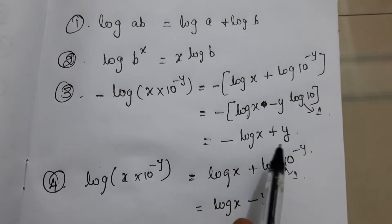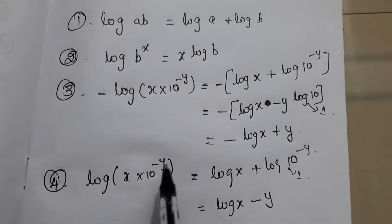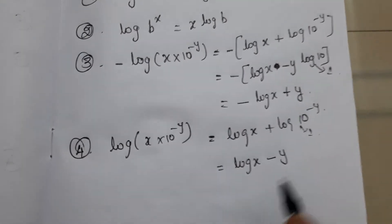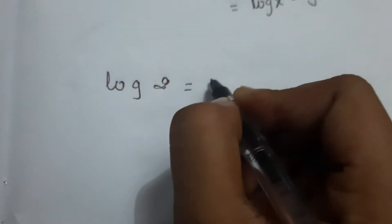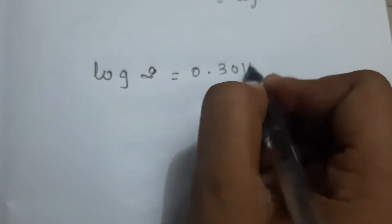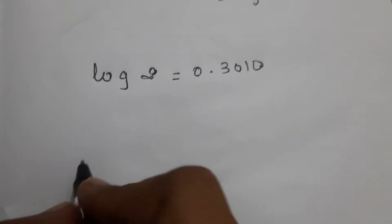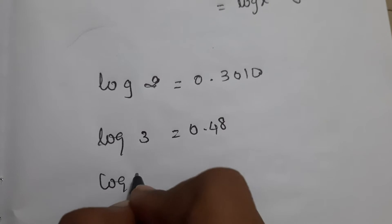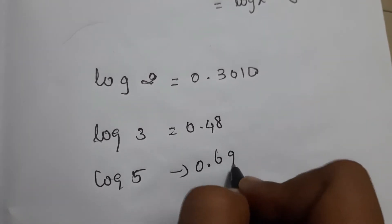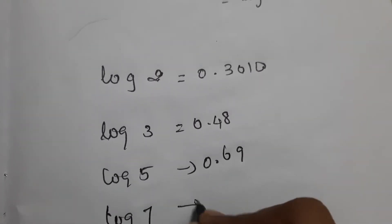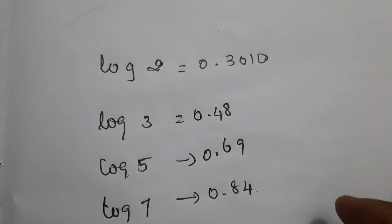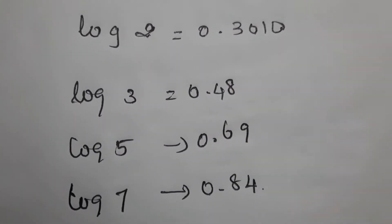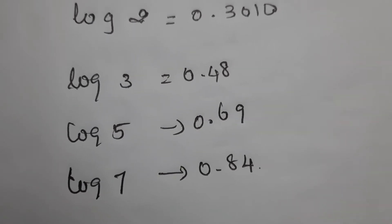You need to remember these values: log 2 = 0.3010, log 3 = 0.48, log 5 = 0.69, and log 7 = 0.84. Also remember that log 10 = 1. By remembering these values, we can find the log of any number without using a calculator.